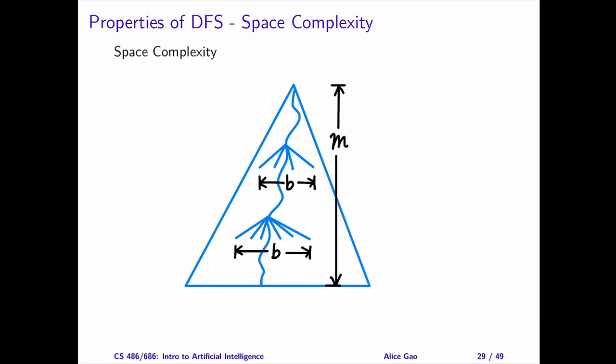In summary, DFS must remember at most M nodes on the current path. Furthermore, for each of the M nodes, DFS needs to remember at most B siblings.